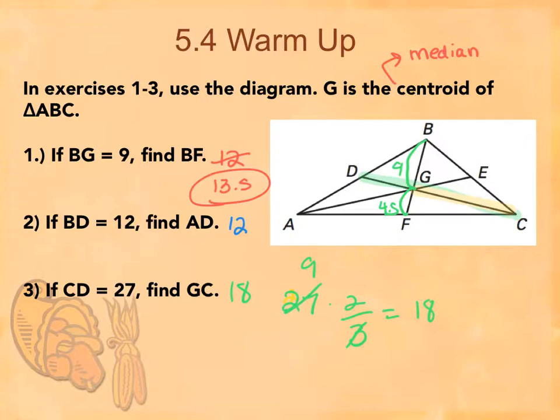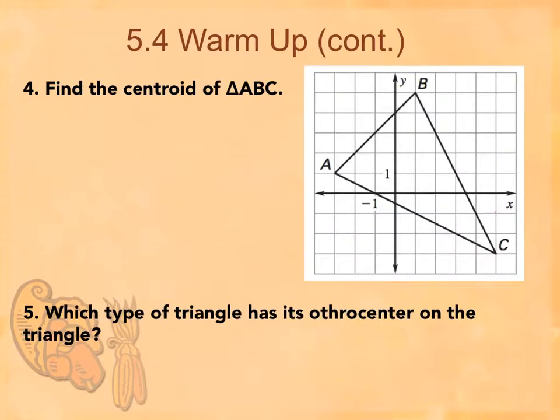Questions on any of the other ones? You have to be able to recall that centroid means median, and medians use the two-thirds rule. Because obviously these are all going to get looped together on your test.